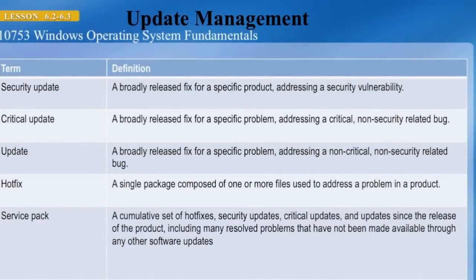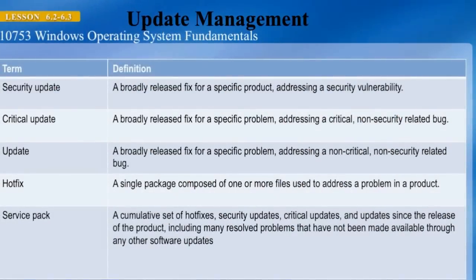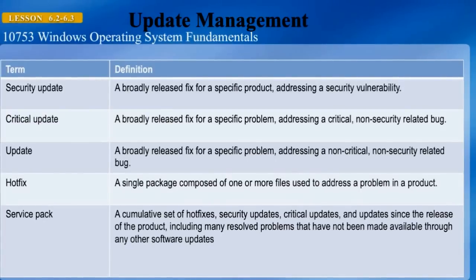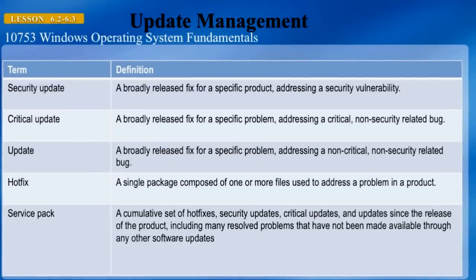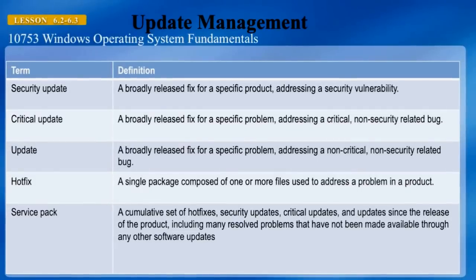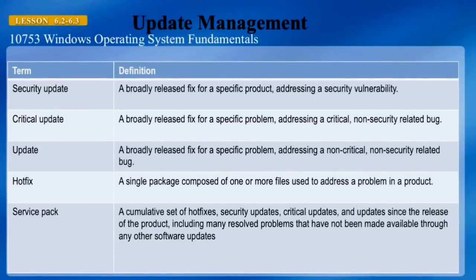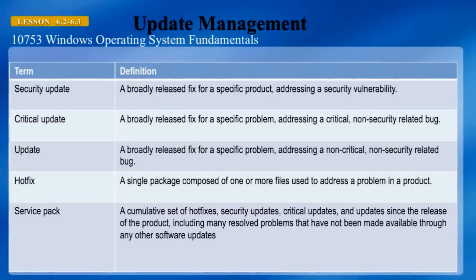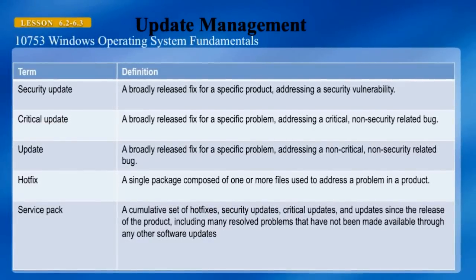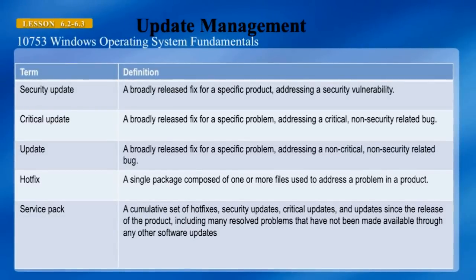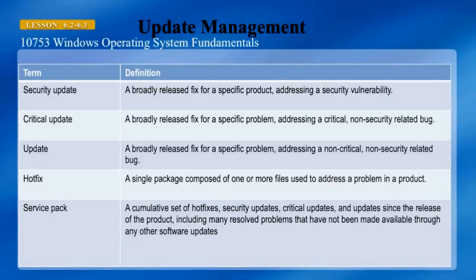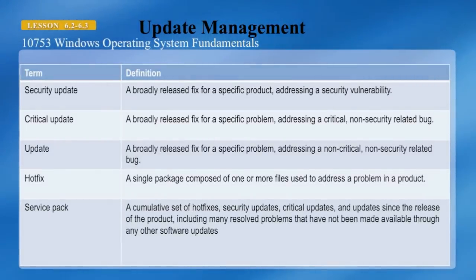There are different types of patches that can be applied to your system. A security update is a broadly released fix for a specific product addressing a security vulnerability. A critical update addresses a critical non-security-related bug. An update addresses a non-critical, non-security-related bug. A hotfix is used to address a problem in a product. A service pack is a cumulative set of hotfixes, security updates, critical updates, and updates since the release of the product, including many resolved problems not previously made available through other software updates.